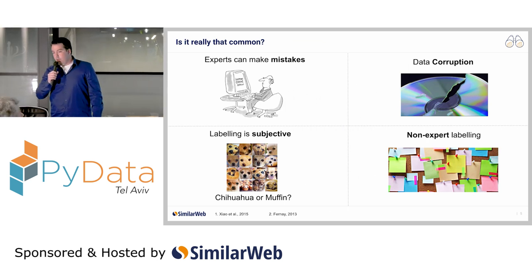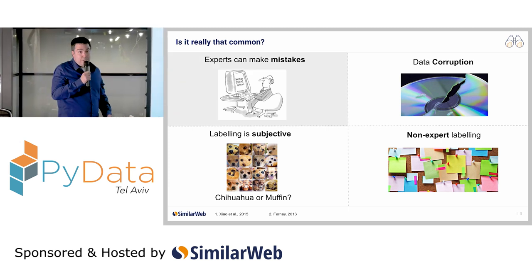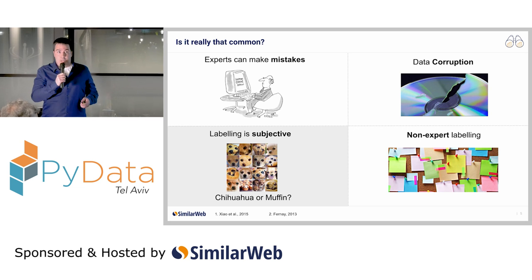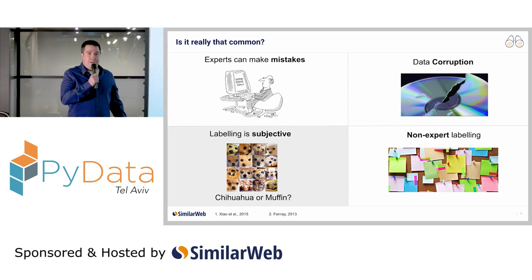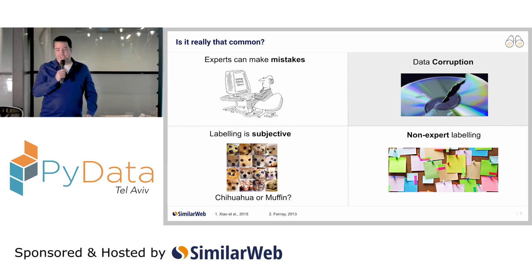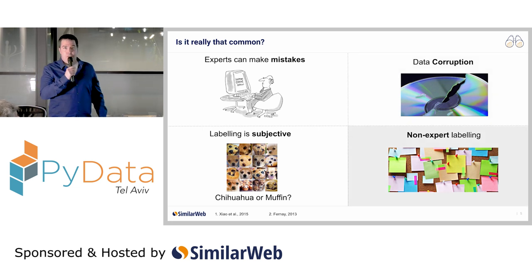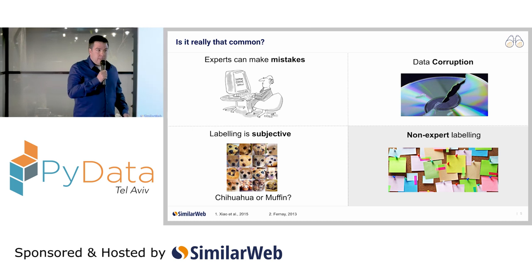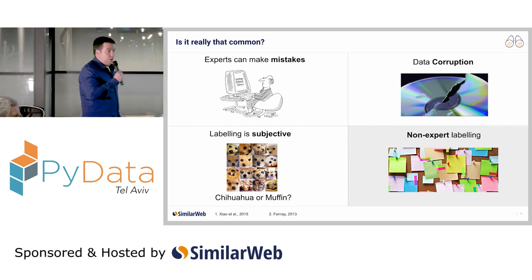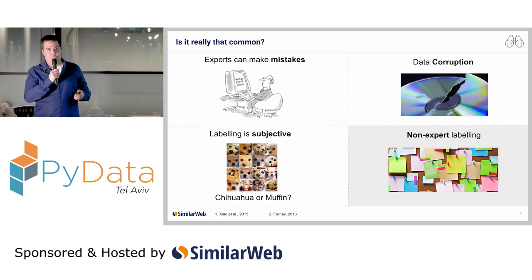In general, label noise can occur due to several reasons. First, expert labelers do make mistakes from time to time. Second, the categorization of certain instances may be subjective or very confusing — like differentiating between chihuahuas and muffins. Third, data corruption can occur due to encoding problems or typing errors. And fourth, which is very relevant to current-day machine learning, since labeling is a tedious thing to do, we often search for cheaper alternatives such as crowdsourcing or image annotations obtained directly from the web, and such data sources might produce labeling of lower quality.